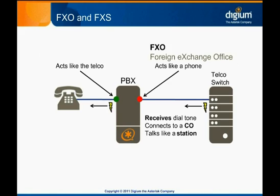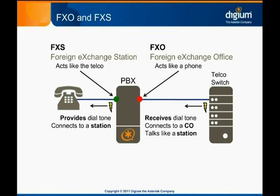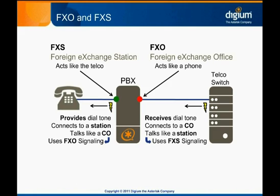In order for Asterisk to let analog phones connect to itself, it must behave like the telco and provide voltage and dial tone on the circuit. So we have two different types of ports. An FXS, or foreign exchange station port, provides dial tone, connects to a station or phone, and talks like the central office. We say that an FXO port uses FXS signaling because it talks like a station, and an FXS port uses FXO signaling because it talks like an office. It's easy to get this backwards, so just try to remember that each port type uses the opposite signaling. Note that both types of ports provide bidirectional communication.